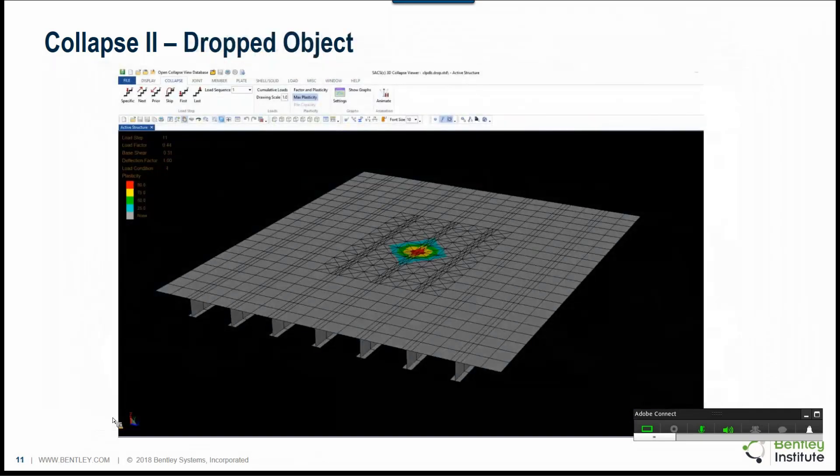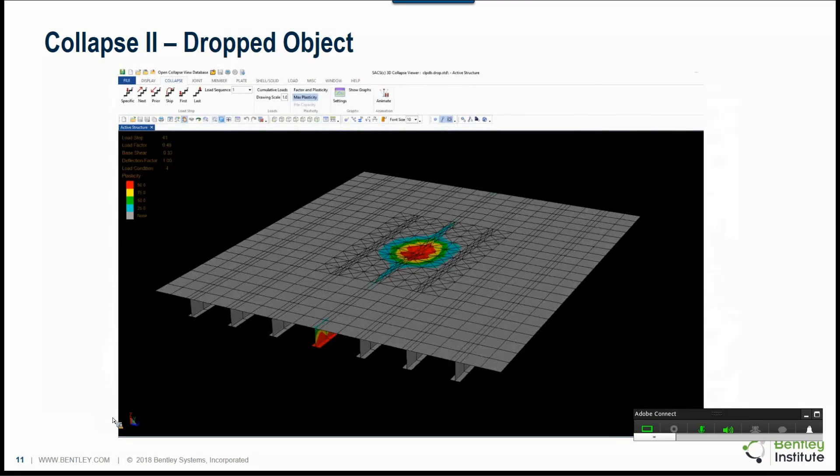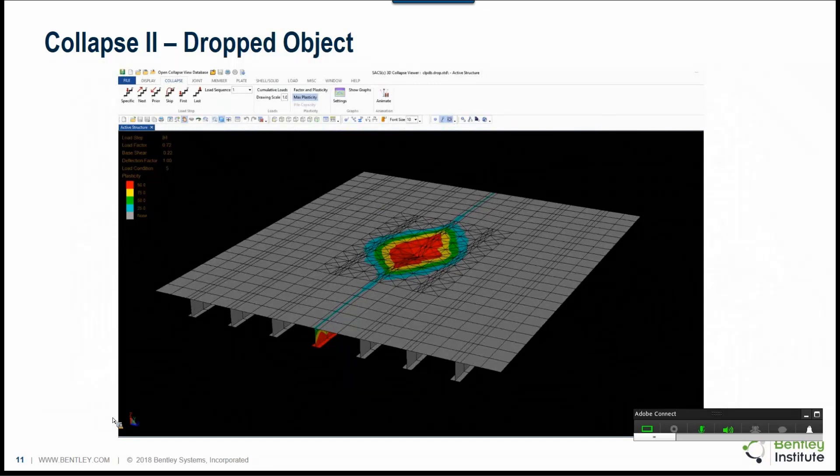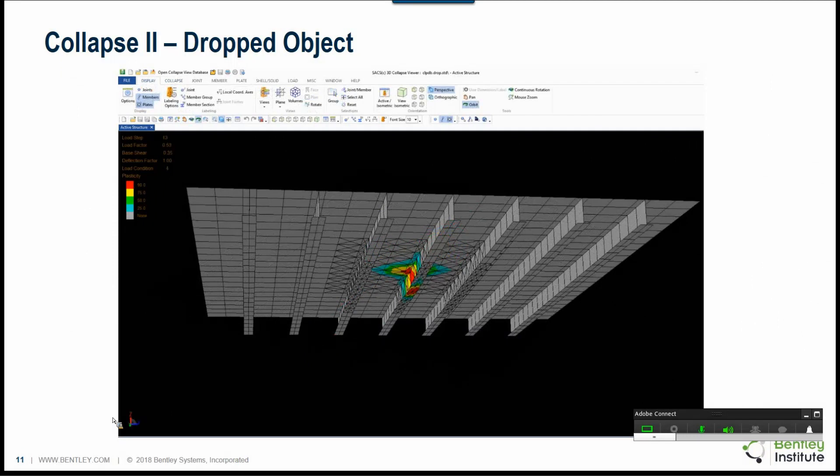This here is a dropped object analysis. Here we have meshed the deck in the vicinity of the dropped object. And the deck in addition to the deck, the beams underneath the supporting beams have also been meshed. And you can see the new collapse can now predict very large deformations as you see for the beam underneath the deck there.